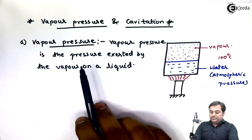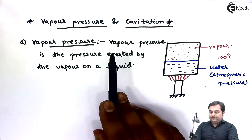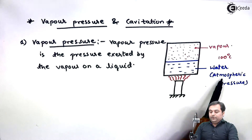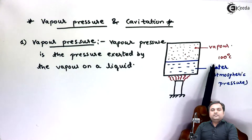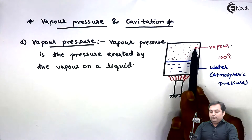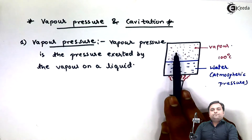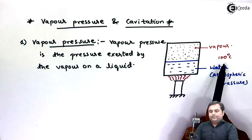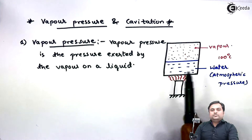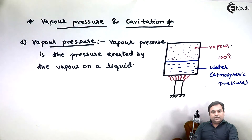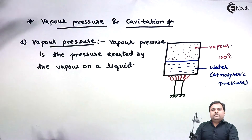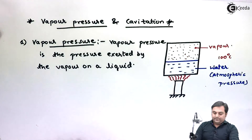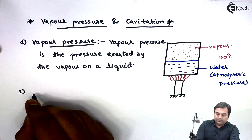Now vapor pressure can change. For atmospheric conditions we know that water boils at 100 degrees Celsius, but if we decrease the pressure, water will boil at a temperature less than 100 degrees. So this vapor pressure value can change, and this concept of vapor pressure applies even when water is flowing and subjected to differences in temperature.